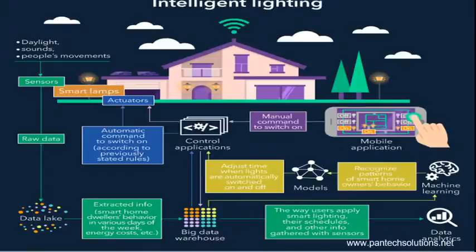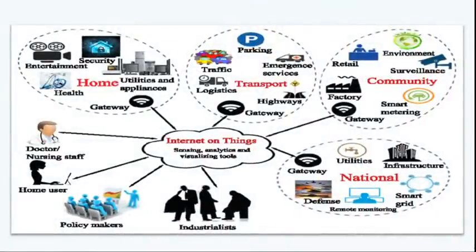Next — where and how we can use IoT. You can use it in home: for health prediction, or entertainment prediction like movie recommendations, or security purposes. Nowadays we have door locks with fingerprint — this comes under IoT. And utilities and home appliances — these are the areas we can use IoT in the home.